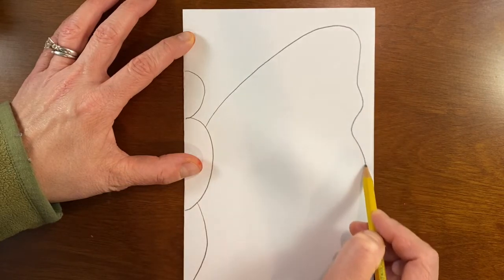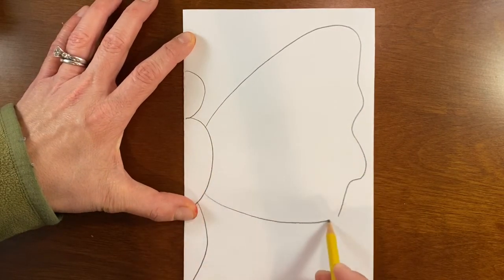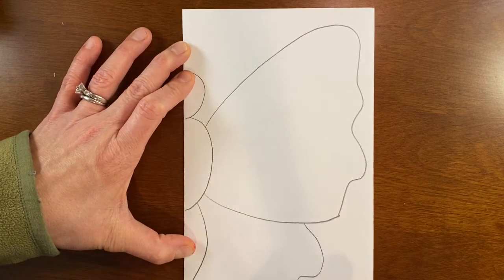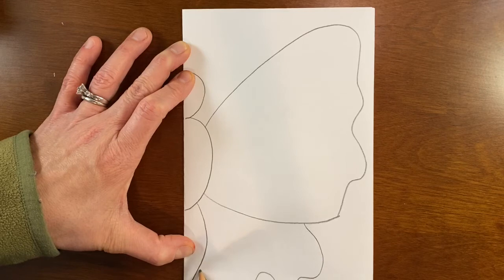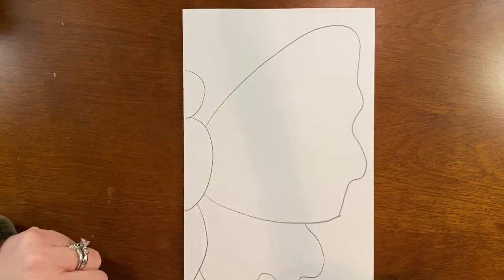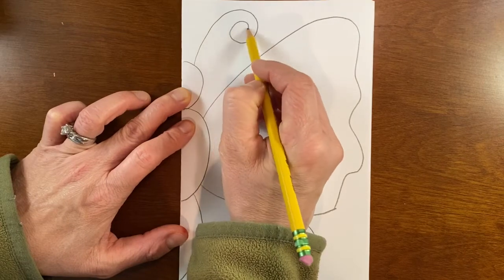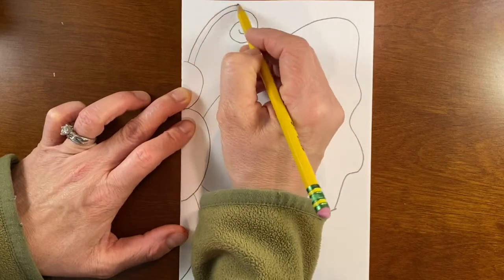You can decorate that wing if you want it fancy on the edges. Then we need the hind wing which is going to be coming down here, and again you can decorate that edge however you'd like. We're going to add only one antenna. If you want to draw it twice so that you can color it, you can do that.